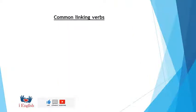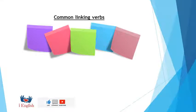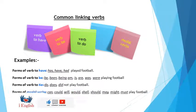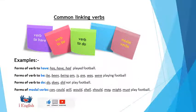And now with the common linking verbs. Verb to have, verb to be, verb to do, and modal verbs. Forms of verb to have: has, have, or had played football. Forms of verb to be: be, been, being, am, is, are, was, and were playing football.